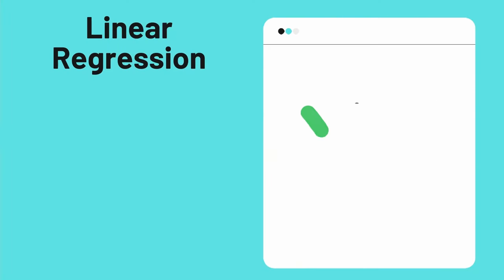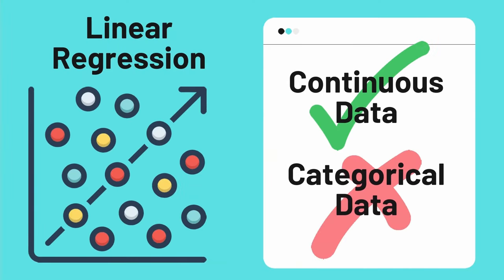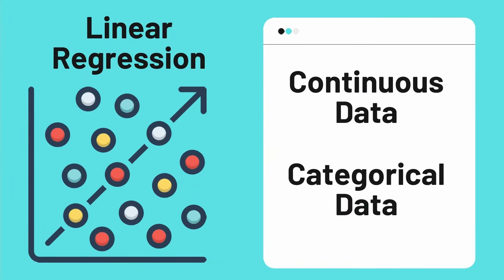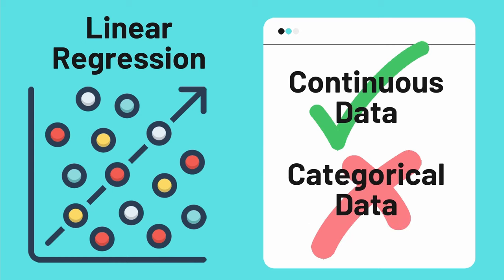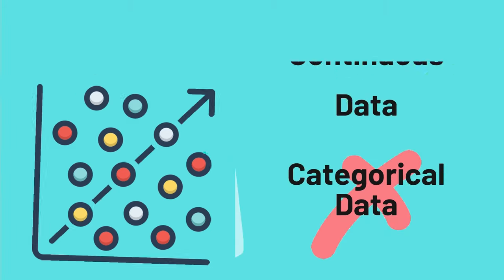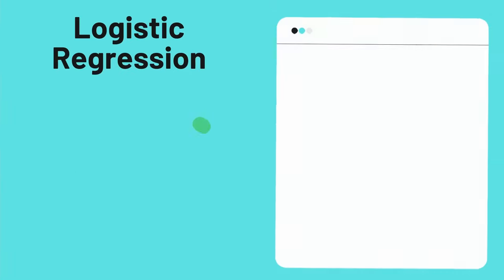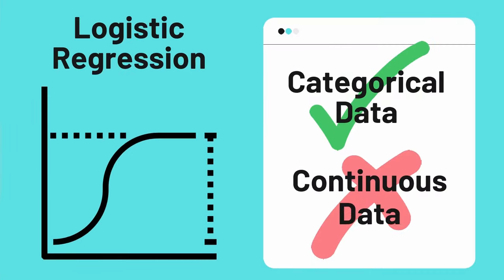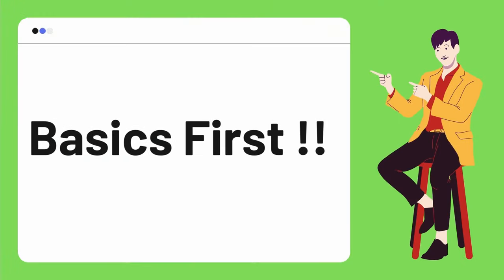For example, linear regression can only be done on continuous data, not on categorical data, while the opposite is true for logistic regression. Hence, to understand algorithms in detail, we should first understand the basics.